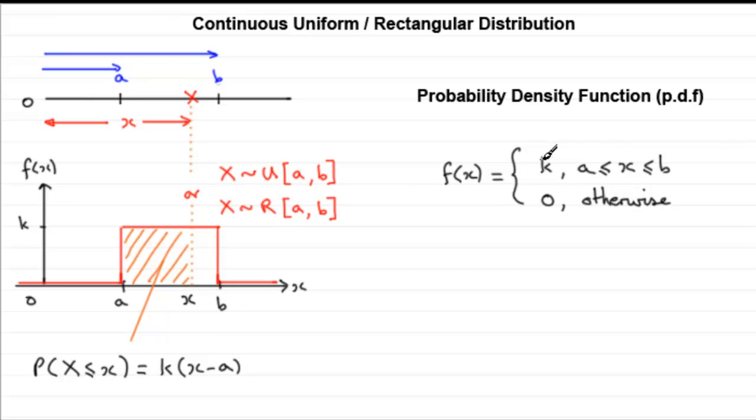But what about this constant k? What is that value? Well, it's going to vary from one distribution to the other. But essentially, we can always see that because the probability of x lying somewhere in this interval is guaranteed, in other words, its probability is going to be one. The probability that our random variable x is going to lie between A and B, we know that's guaranteed, it's going to be one.